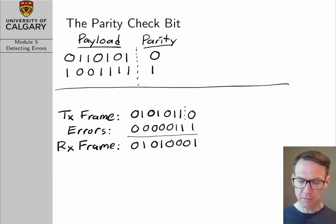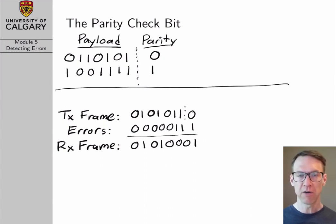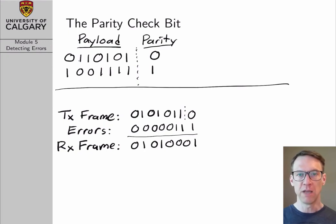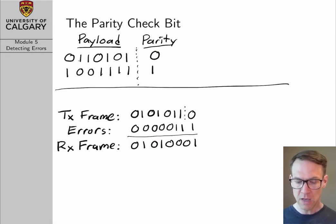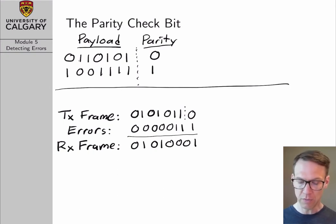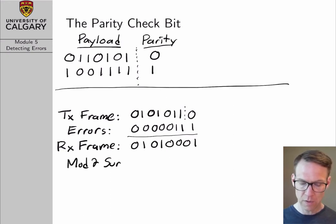So this is our received frame. How do we check whether or not an error has occurred? Our parity check scheme is supposed to guarantee we have an even number of 1s at all times. To detect an odd number of 1s, we take the modulo-2 sum of the entire received frame — it's going to equal 1 if we have an odd number of 1s. The modulo-2 sum equals 1, so we know that an error has occurred.